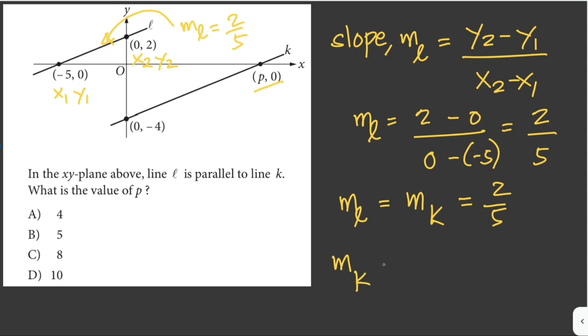So we can set up our slope formula for line K. So that'll be slope y sub 2. Let's say this is x sub 1, y sub 1, x sub 2, y sub 2. So it'll be 0 minus negative 4. So it'll be 0 minus negative 4 and then P minus 0.